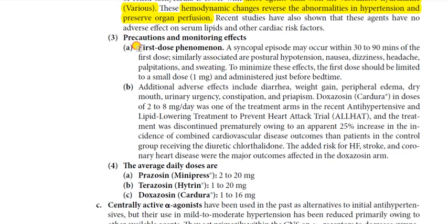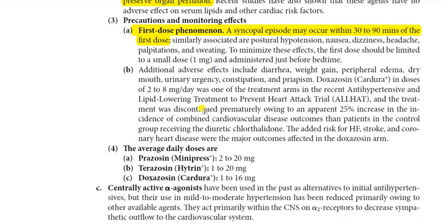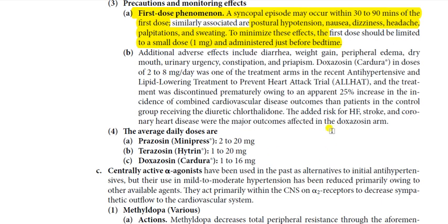Precaution and monitoring: the first-dose phenomenon is important. A syncopal episode may occur within 30 to 90 minutes of the first dose. The patient may experience partial loss of sensation, drowsiness, or may even fall. This is because the initial dose causes excessive vasodilation, pooling blood in the lower extremities. Associated symptoms include postural hypotension, nausea, dizziness, headache, palpitation, and sweating. To minimize these effects, the first dose should be limited to a small dose of 1 mg and administered just before bedtime.